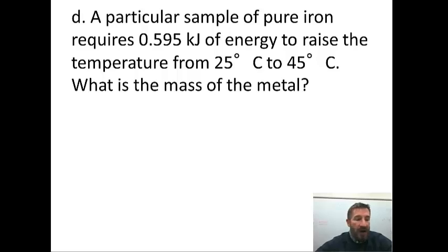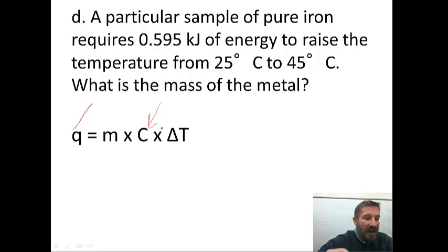Now let's do one problem, and we'll finish with this one. A particular sample of pure iron requires 0.595 kilojoules of energy to raise the temperature from 25 degrees Celsius to 45 degrees Celsius. What is the mass of the metal? First, we're going to use the formula we talked about when we did the lab today, which is Q equals M times C times delta T. We have the energy that goes here. One thing we need to do with the energy is the units for specific heat for metals are given in joules. The specific heat for iron is 0.45 joules per gram degree Celsius.